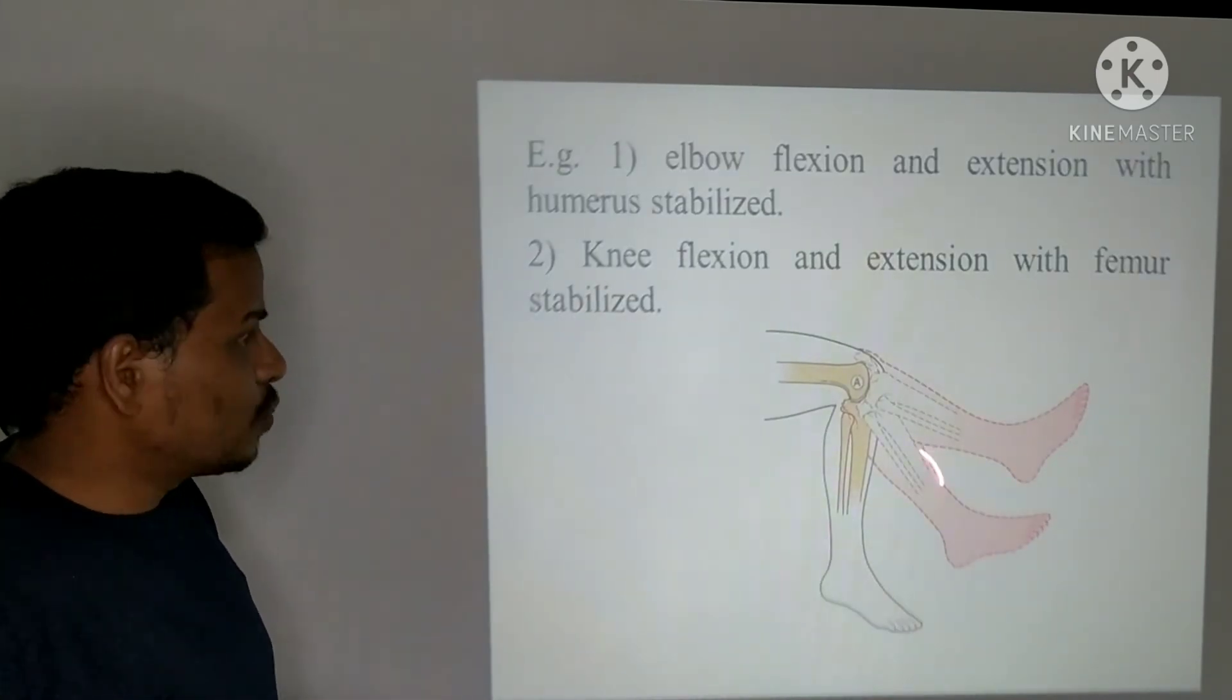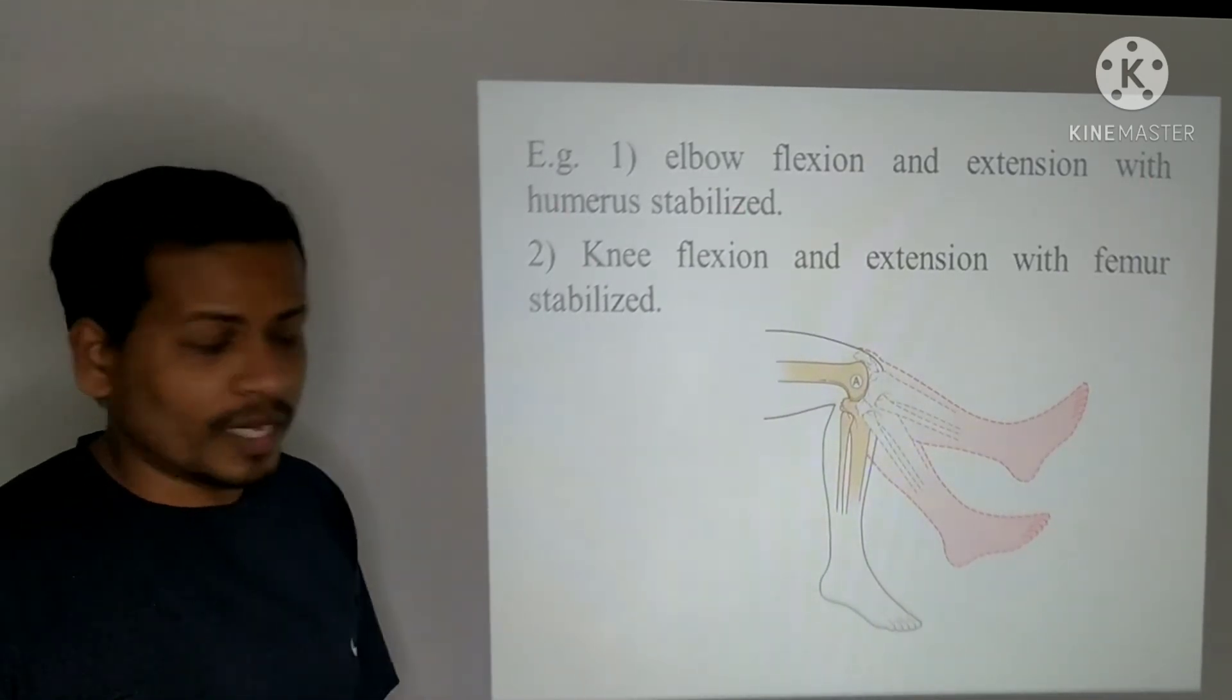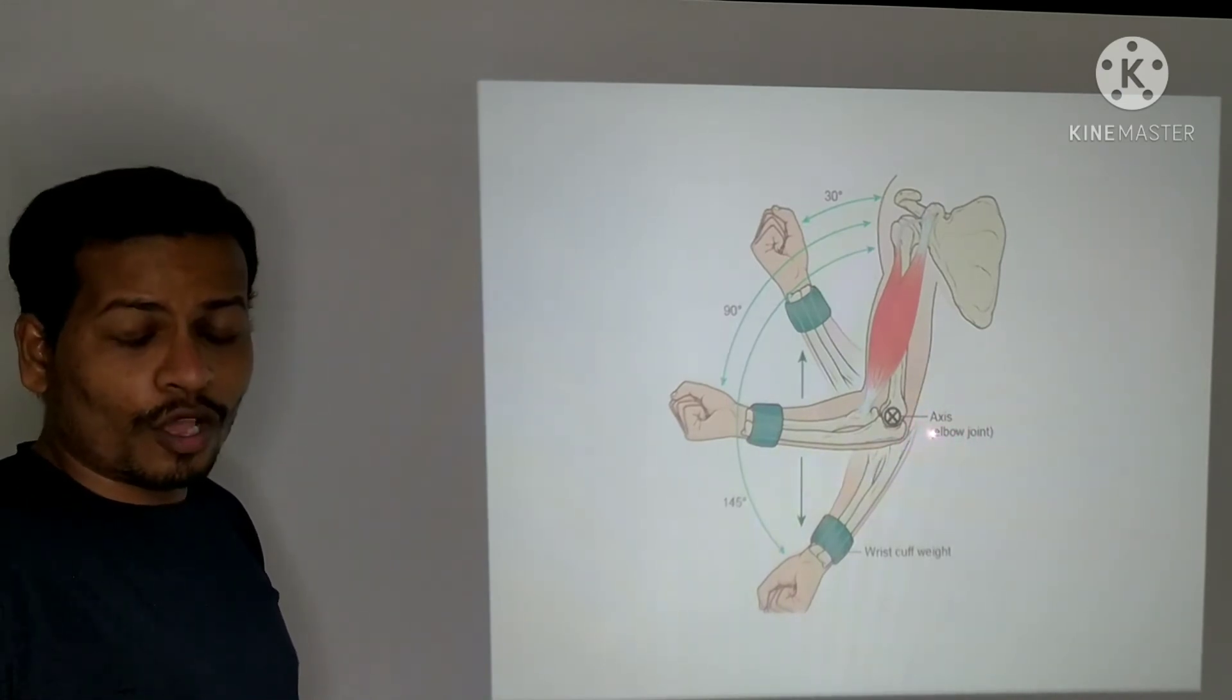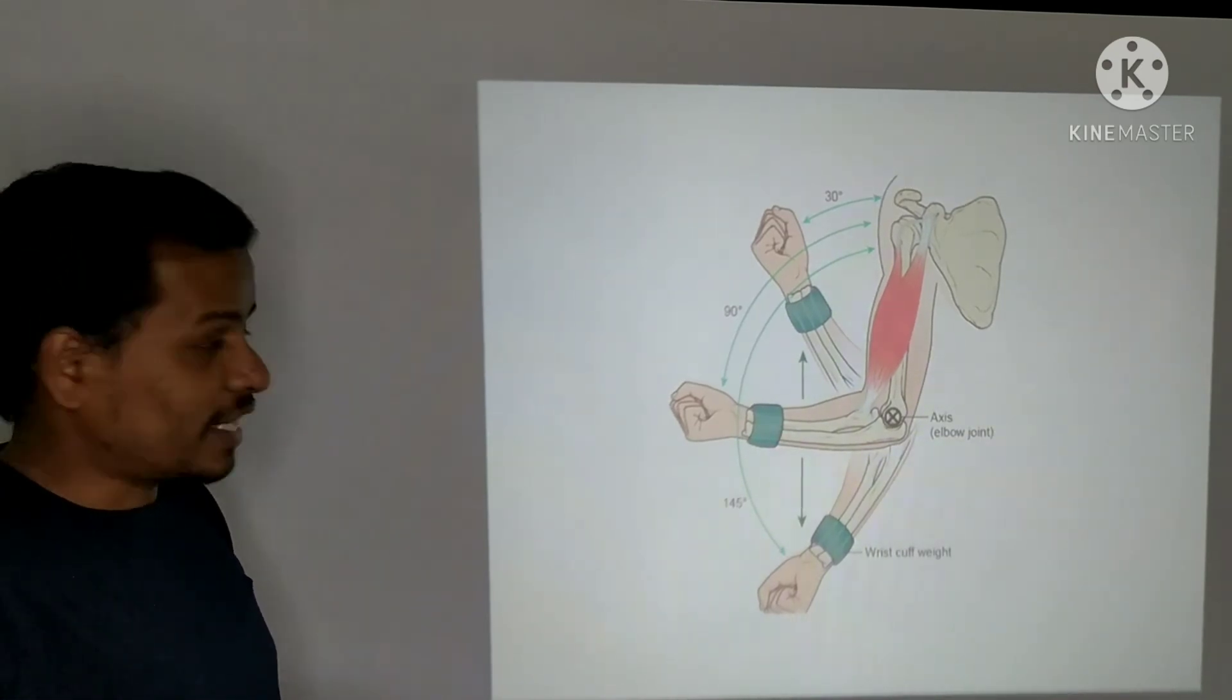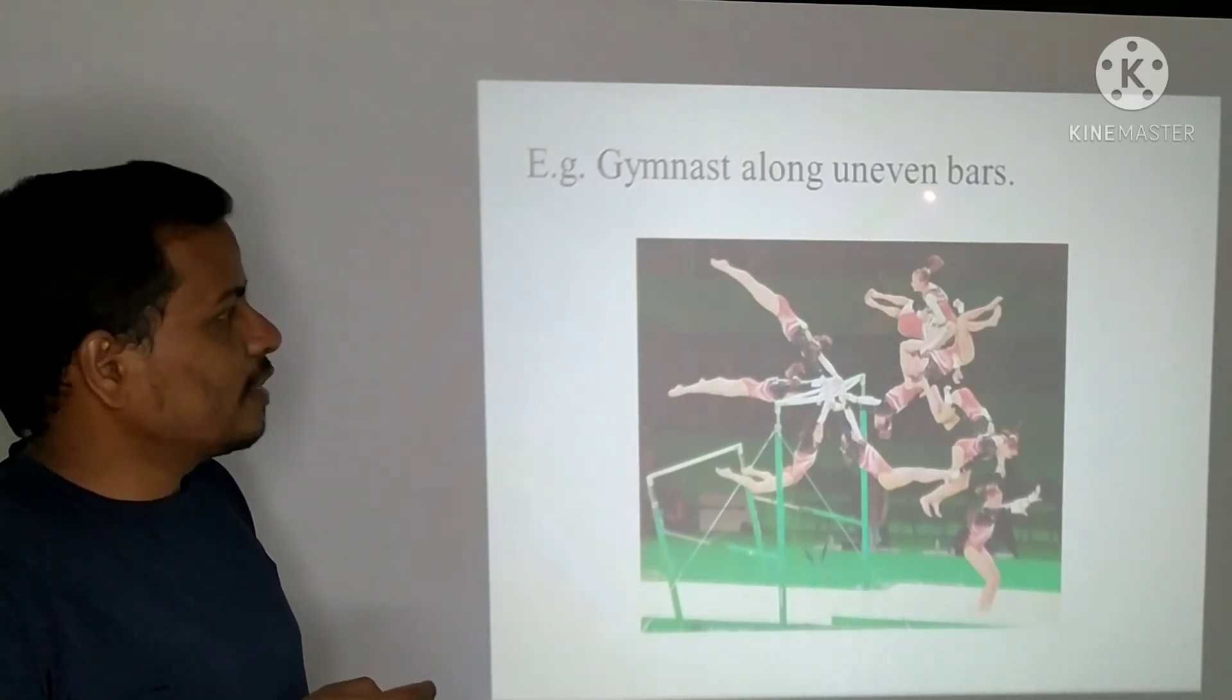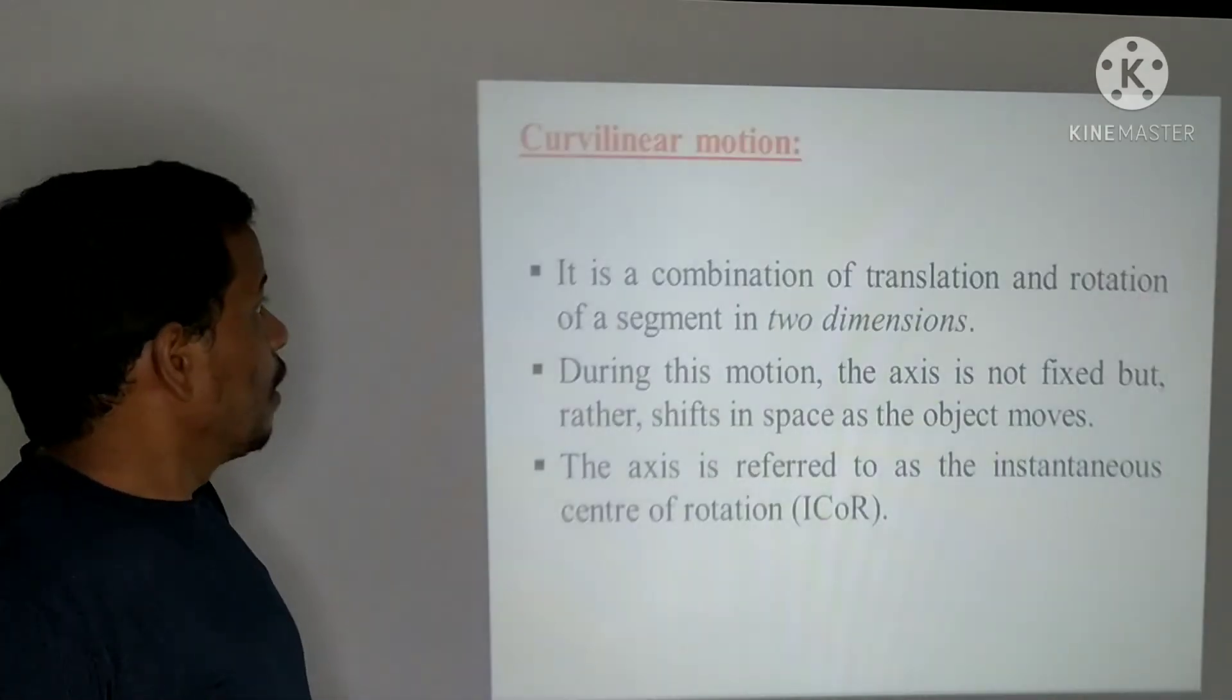What are the examples? Knee flexion and extension with femur stabilized. Elbow flexion and extension with humerus stabilized. This is the axis at the elbow joint at the medial condyle of the humerus. This is in the direction of elbow extension, and this is in the direction of elbow flexion. Another example is a gymnast along an uneven bars. This is a typical example of a rotatory motion according to the sports perspective.